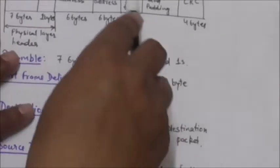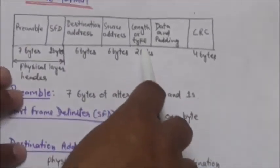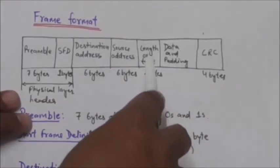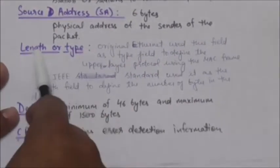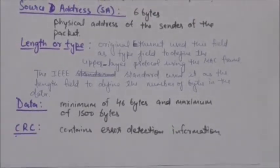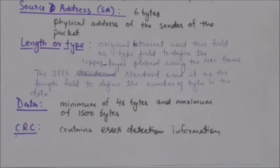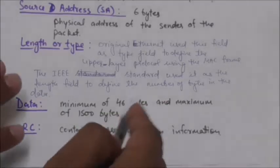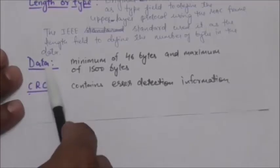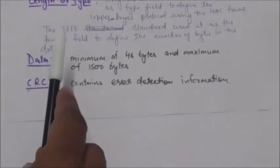The next field is Length or Type. This field is defined either as a Type field or a Length field. The original Ethernet used it as a Type field to define the upper-layer protocol using the MAC frame. The IEEE standard used it as a Length field to define the number of bytes in the data field.